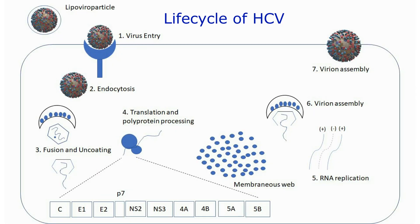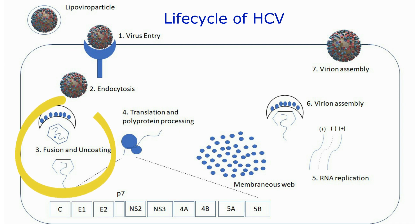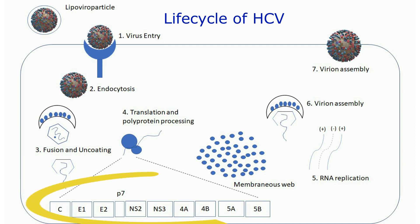The Life Cycle of the Hepatitis C Virus: The virus enters through clathrin-mediated endocytosis. The cellular and viral membranes fuse and the capsid is disassembled in a process triggered by the low pH of the endosome.